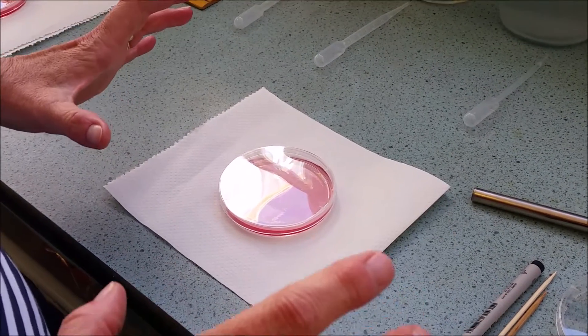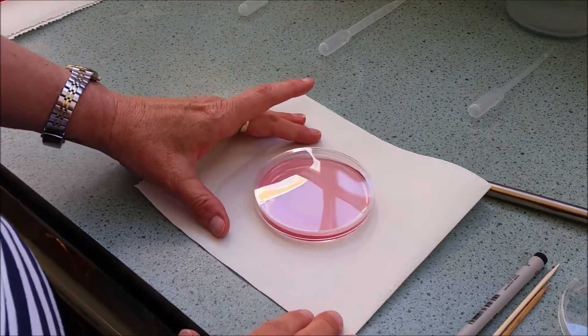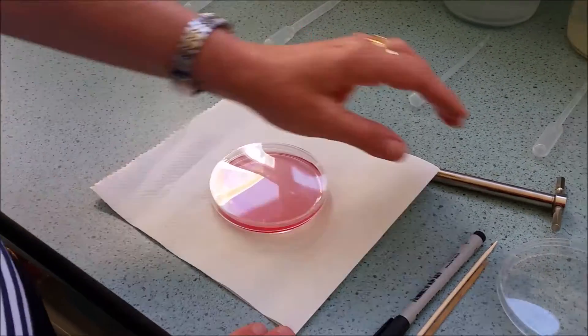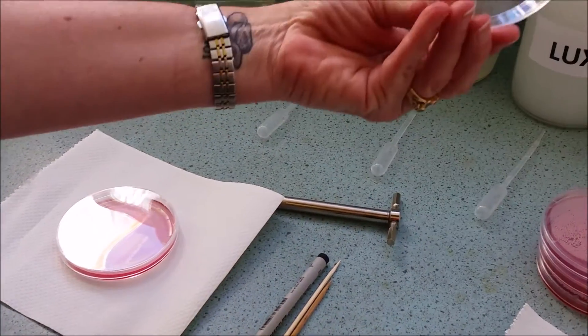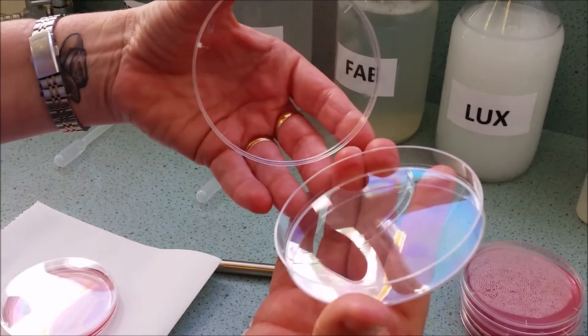This is our prac method that you'll be using. You'll be collecting two petri dishes. When they're empty they look like this. It's just a lid and a bottom to it.